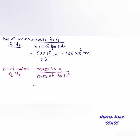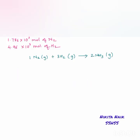Now let's find the number of moles of H₂. The molar mass of H₂ is 2.016 g/mol (since 1 hydrogen atom is 1.008 g/mol). The mass is given as 10 kg, converted to grams: 10 × 10³ ÷ 2.016. The number of moles of H₂ is 4.96 × 10³ moles. So we have 1.786 × 10³ moles of N₂ and 4.96 × 10³ moles of H₂.